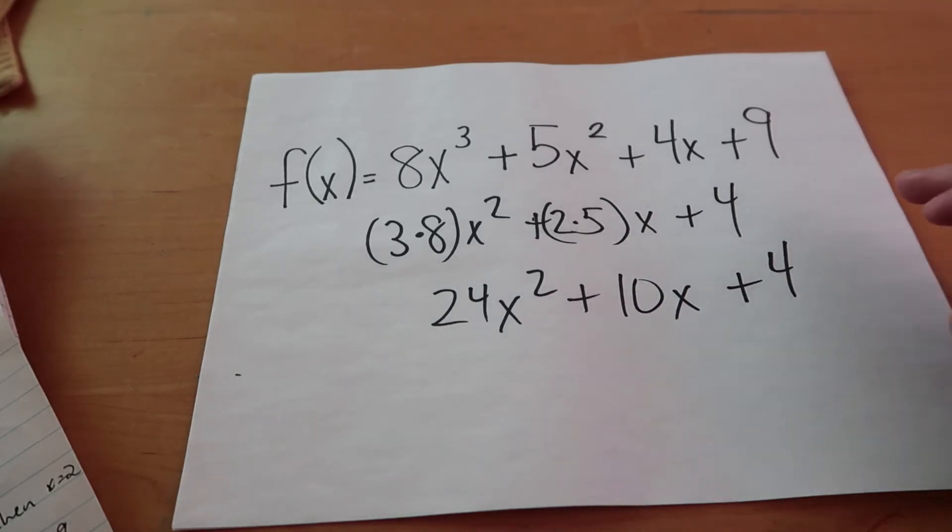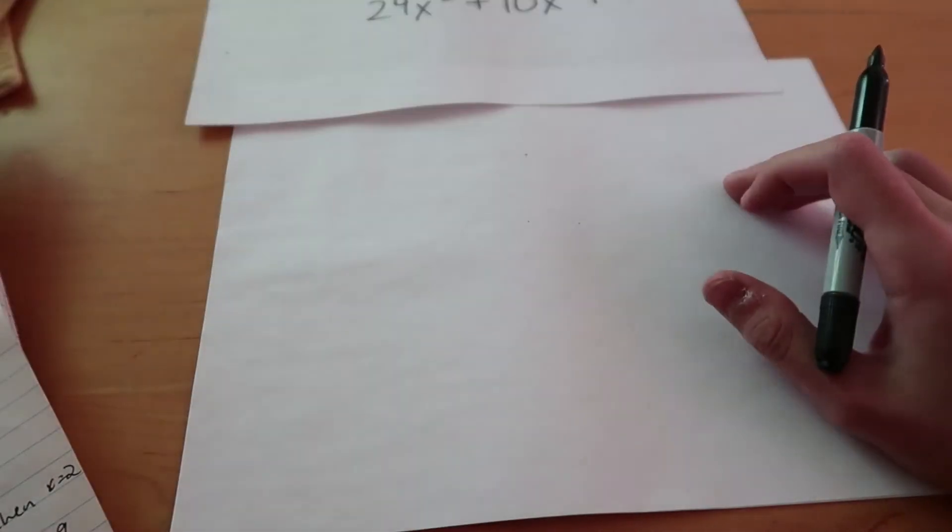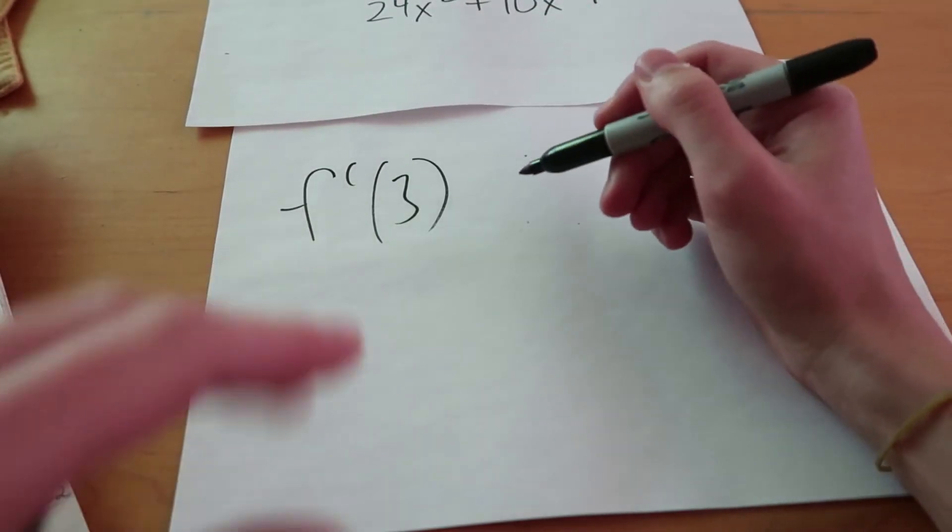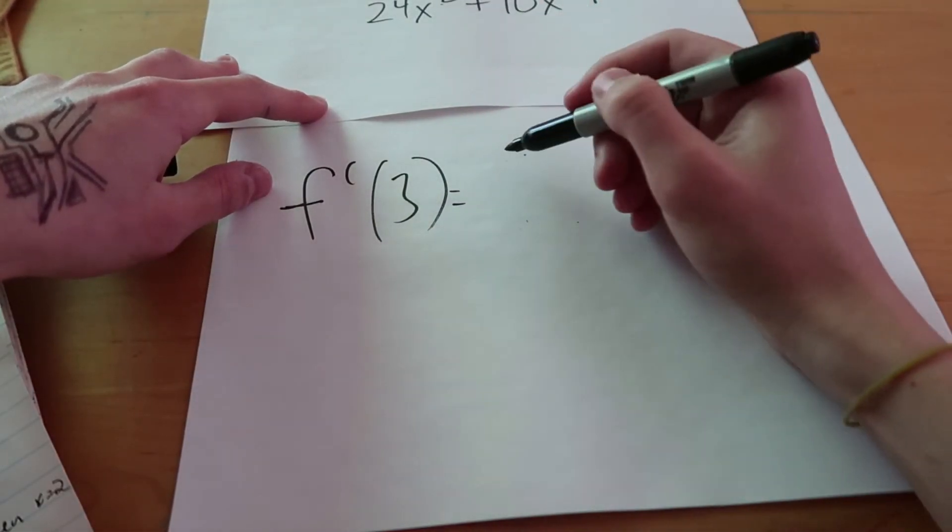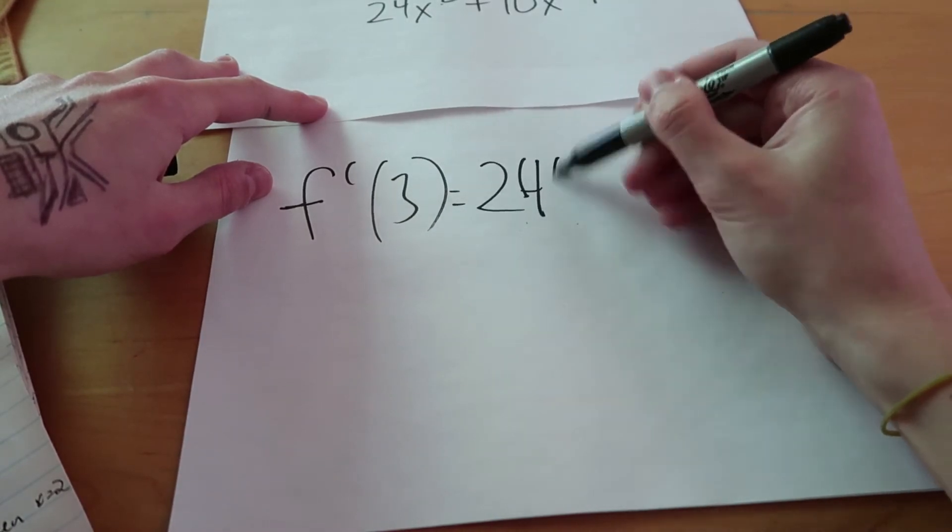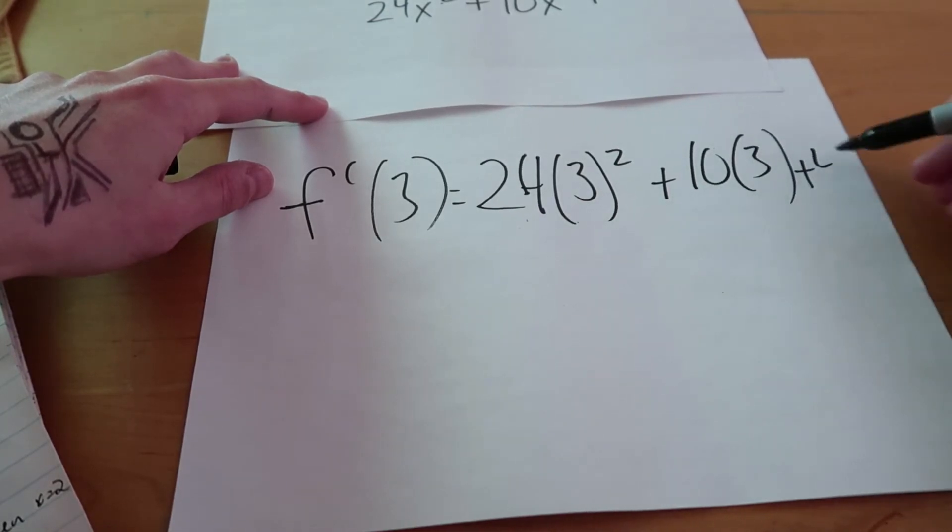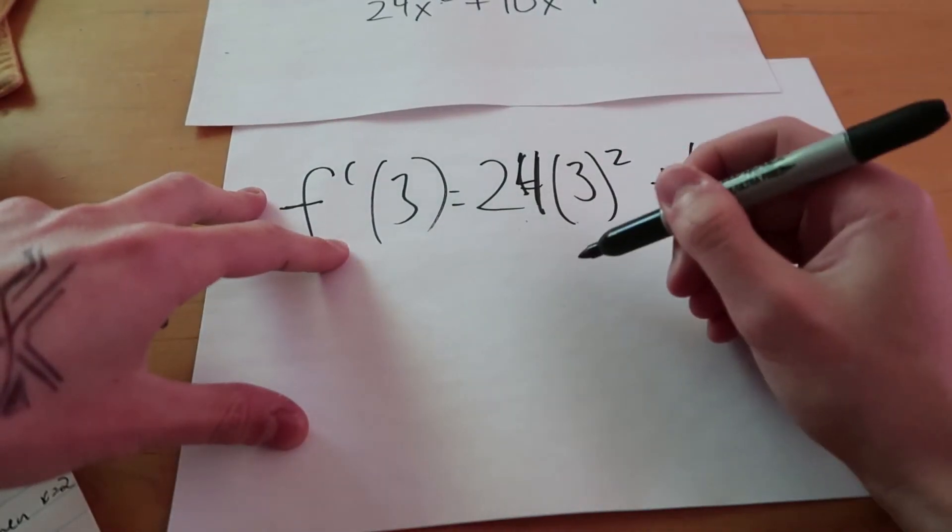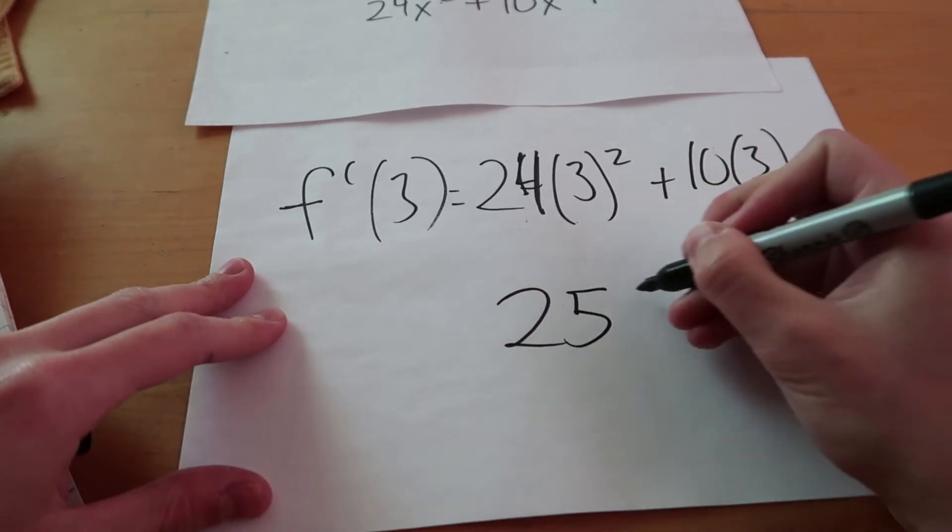now what we can do is find the value of our derivative function with respect to some variables. So let's for example use 3. So we'll say f prime of 3 is going to end up being, we're just going to plug in, we're just going to substitute x for 3. So we'll say 24 times 3 squared plus 10 times 3 plus 4. And when you simplify all that, you get 250.